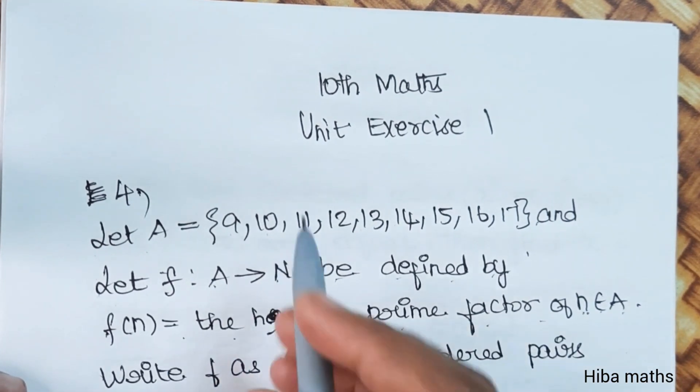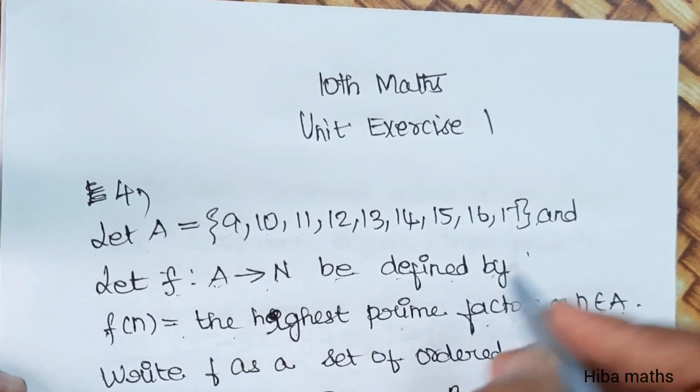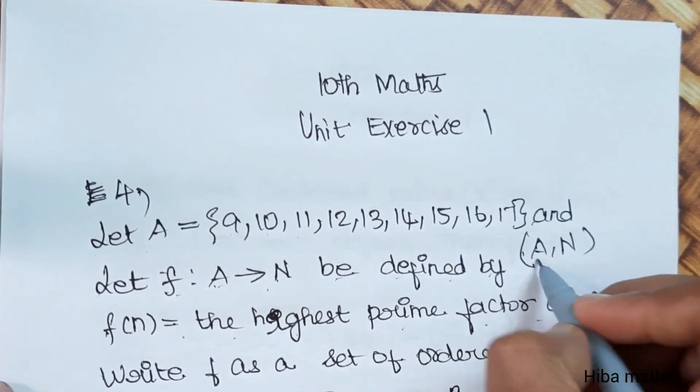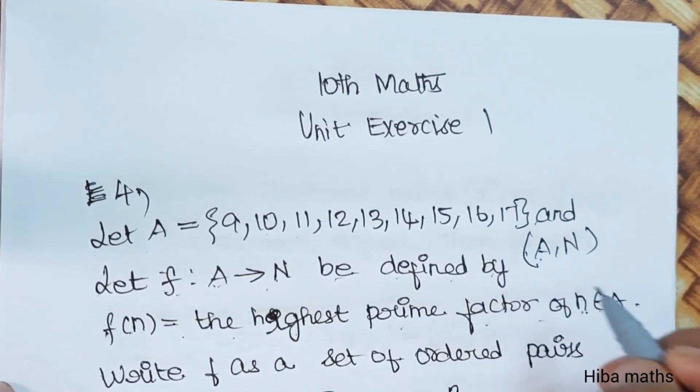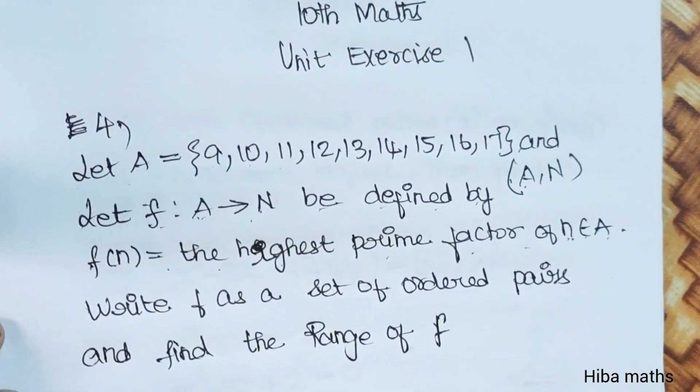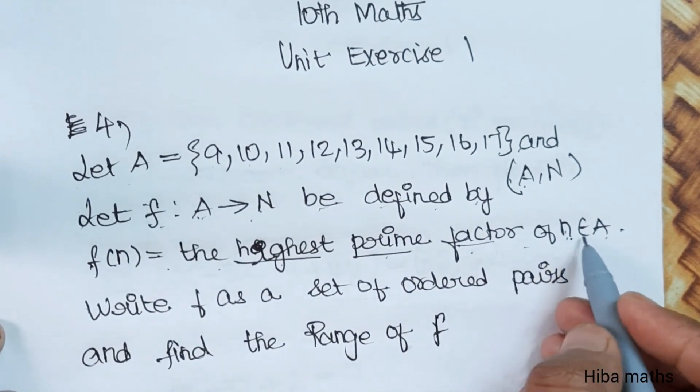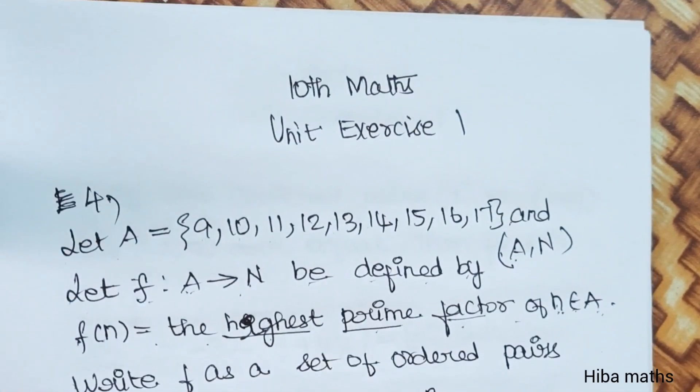So the function is A to N because we have natural numbers. How do you say that the highest prime factor of n belongs to A?